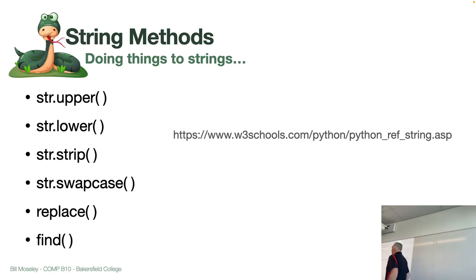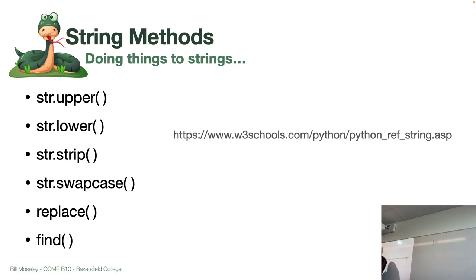If we want to do things to strings, there are a whole bunch of methods for that too. Here are a few favorites: str.upper translates the whole string into all uppercase letters; lower does the same thing for lowercase. Strip — my favorite one — takes the spaces off the front and back of the string.